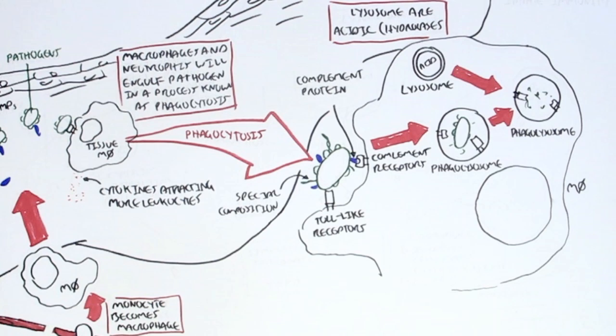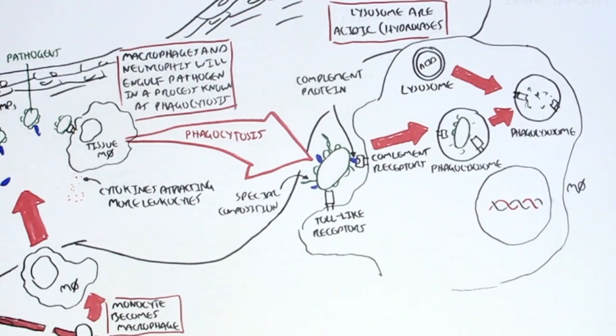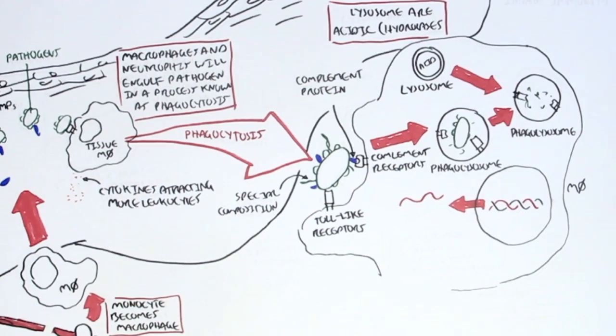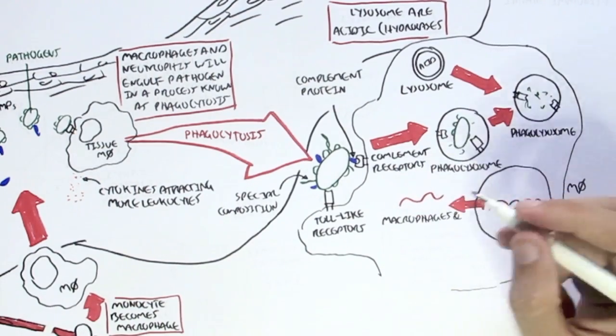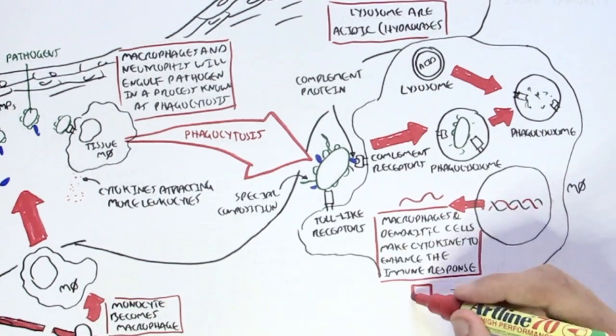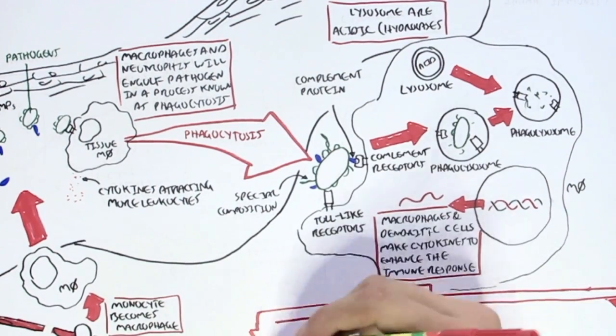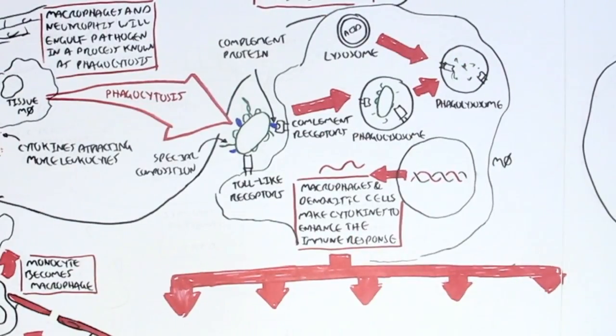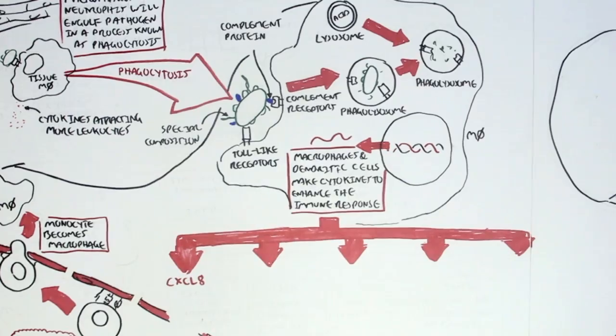So now, the macrophage and dendritic cell, once they have engulfed this pathogen and are beginning to express it, will start secreting cytokines as well to enhance the immune response. The cytokines secreted by the macrophage and dendritic cells are cytokines CXCL8, which attracts more leukocytes.